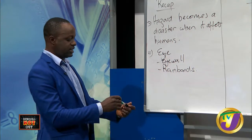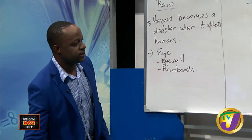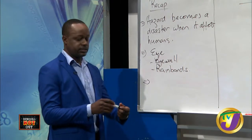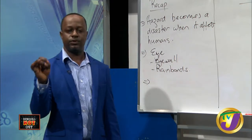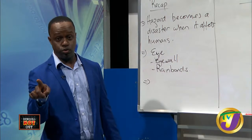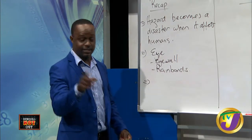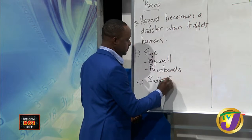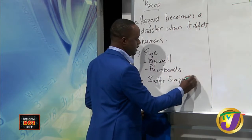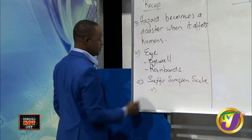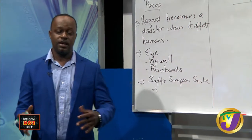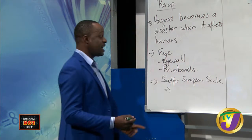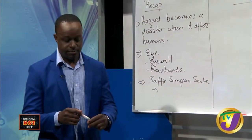Now let's classify hurricanes based on the Saffir-Simpson hurricane scale. How many categories are there on the Saffir-Simpson scale? The answer is five. There are five categories on the Saffir-Simpson scale, and this is how we classify hurricanes based on their magnitude and pressure.